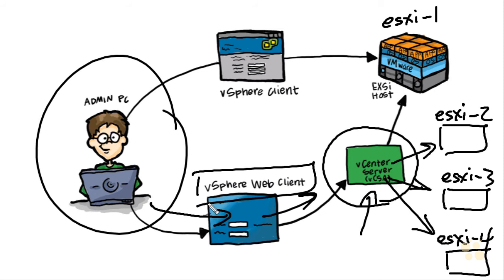Anytime we see vSphere Web Client, think: we're using the web-based interface to manage through the vCenter server. We make our configuration changes at the vCenter server, and it's the vCenter server that interacts with the ESXi hosts to deploy and push that information — at least that's what it looks and feels like from a user perspective when using the vSphere Web Client.